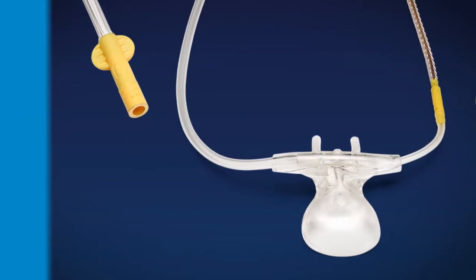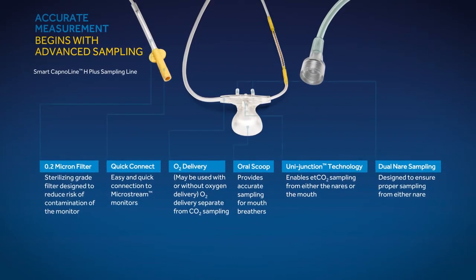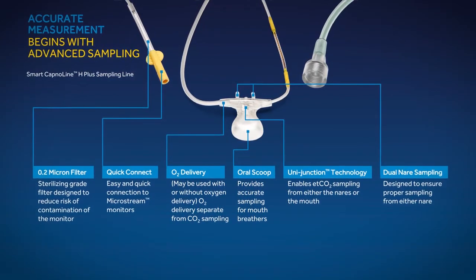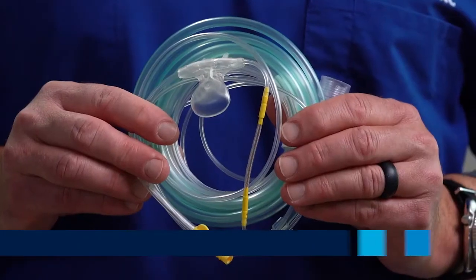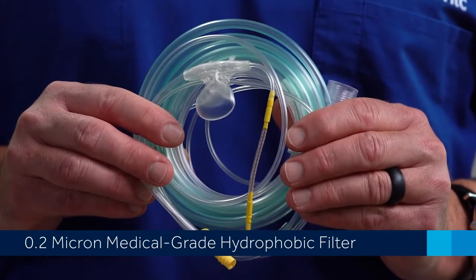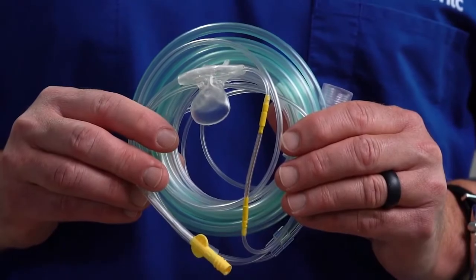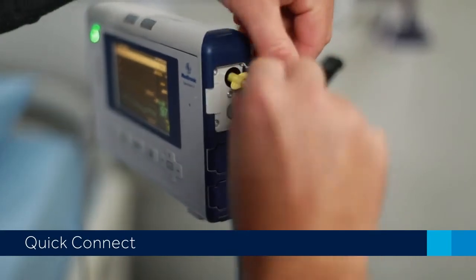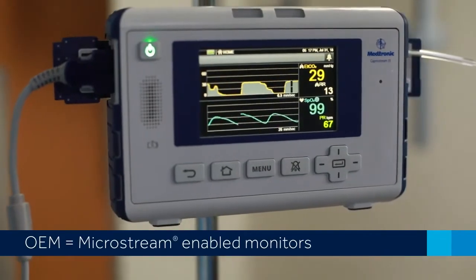The sampling line provides sampling from both nares and the mouth, even at low tidal volumes, with exclusive uni-junction technology. The universal oxygen tubing is for any oxygen connector or direct attachment to any oxygen flow meter. The filter line sampling line is engineered with micro-bore tubing and a 0.2 micron medical grade hydrophobic filter for fluid ingress protection and to help reduce the risk of contamination to the monitor. Quick Connect enables easy and quick connection to the Capnostream 20P and the Capnostream 35 monitors, plus many MicroStream technology enabled OEM monitors.